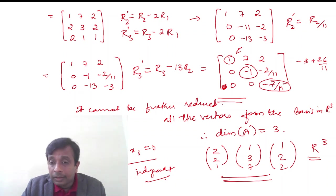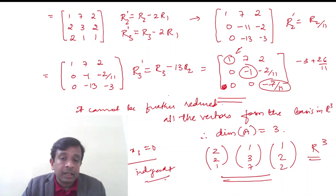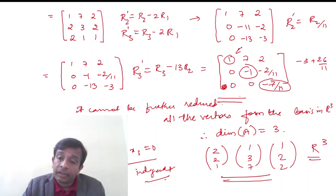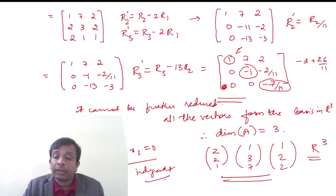When there is a fraction, don't worry — if the steps and process are correct, the values in the matrix are fine. This matrix cannot be further reduced, so the rank equals 3, which equals the number of vectors. Hence they are independent vectors, and they form the basis of the given vector space. The dimension of that basis is 3.